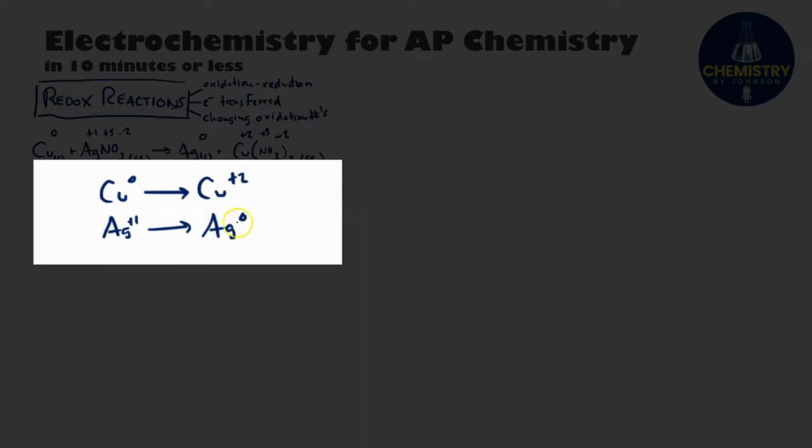The fact that these changes are taking place tells me this is indeed a redox reaction. I can show how the electrons are being transferred. Zero to plus two means copper is getting more positive, therefore losing electrons. Since it's zero to plus two, it's losing two electrons. For the same reason, my silver is gaining one electron to go from plus one to zero, therefore getting more negative by one.